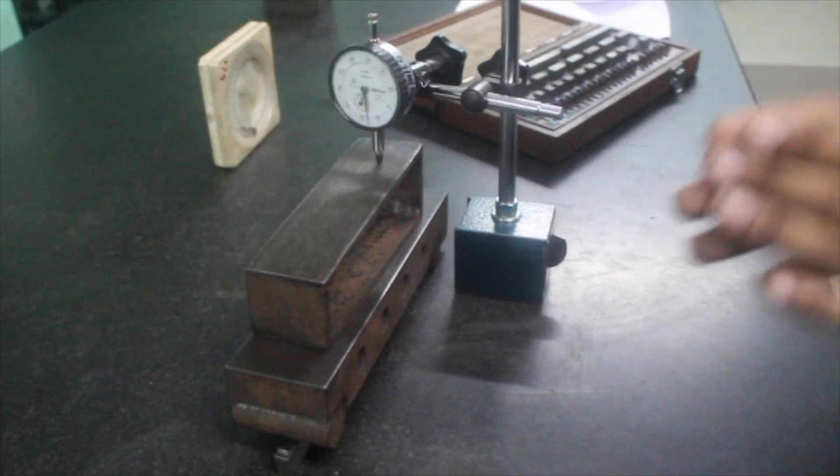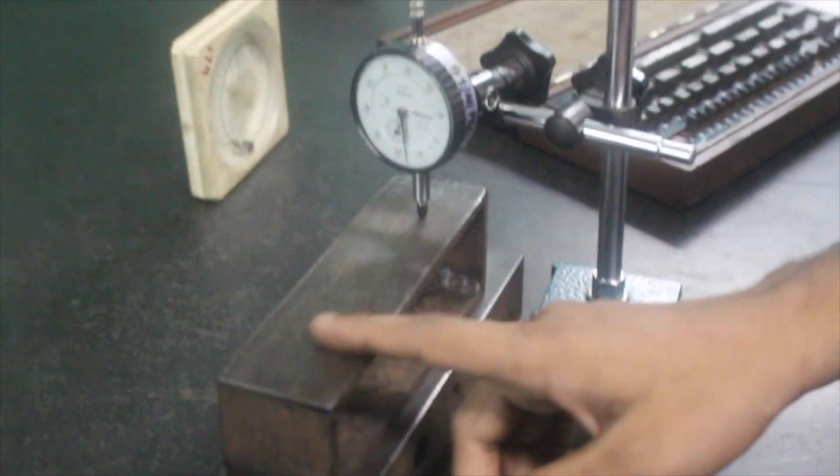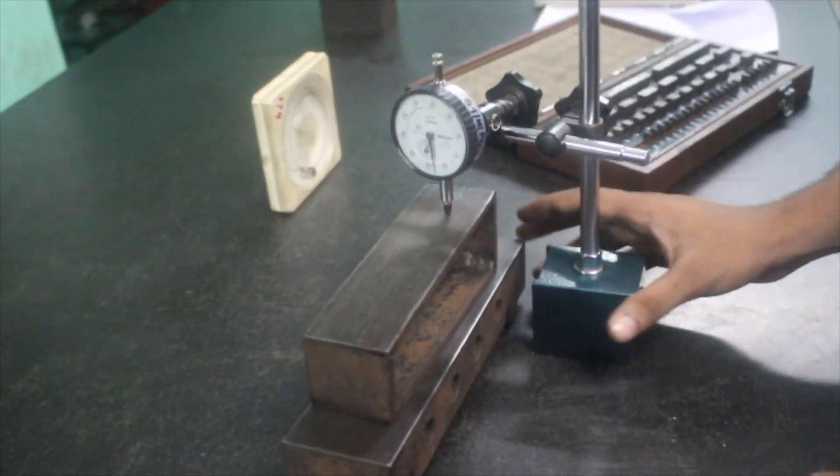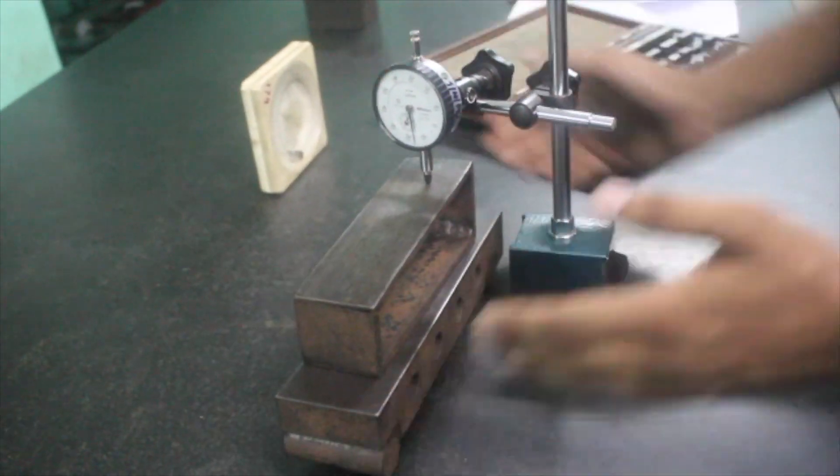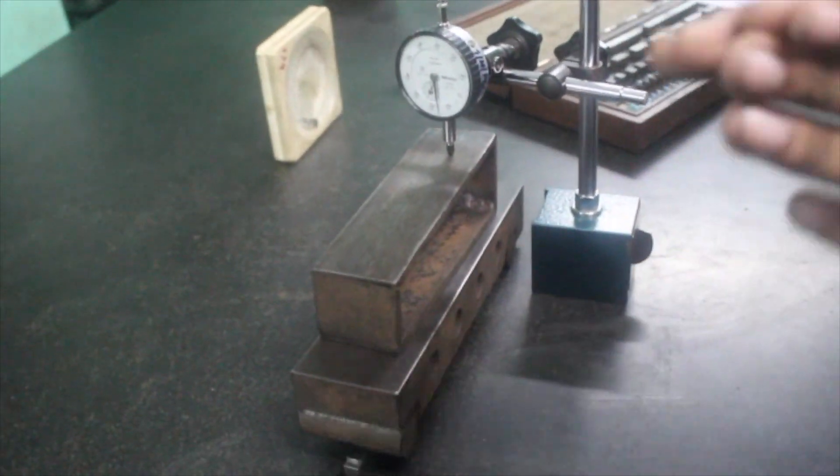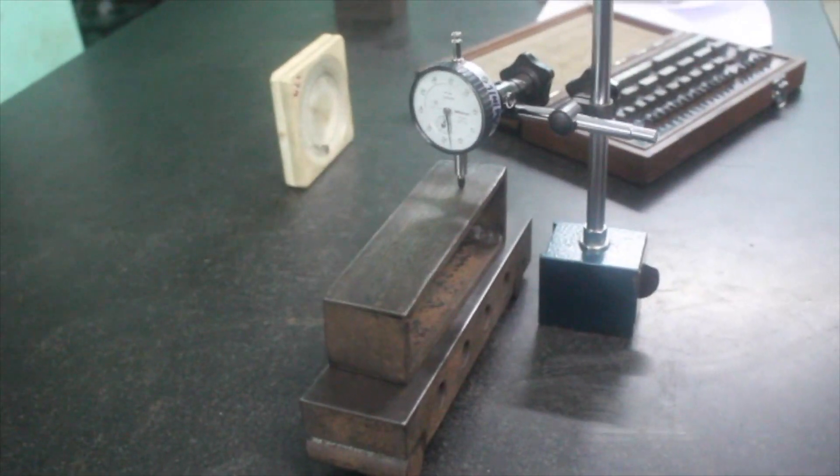Using sin θ = H/L, we can find θ. That particular θ value shows the inclination of this particular surface. This is how, by using sine gauge, sine bar, slip gauge, clinometer, and dial gauge, we find the inclination of a surface. Thank you.